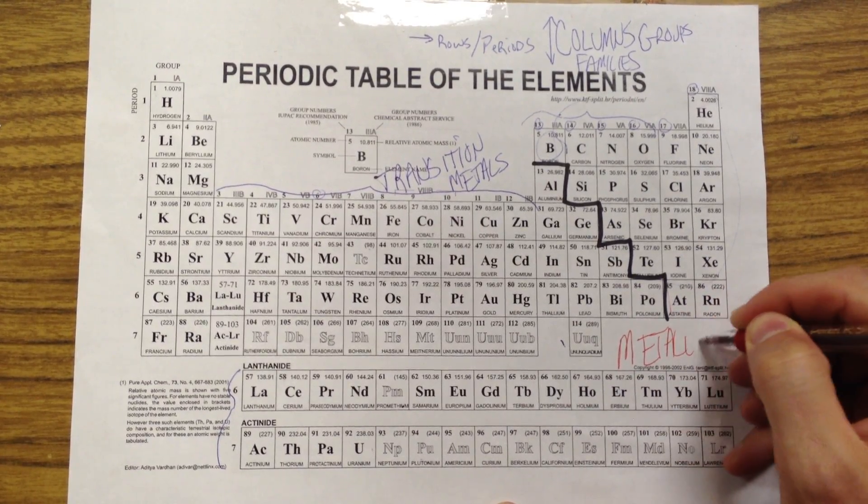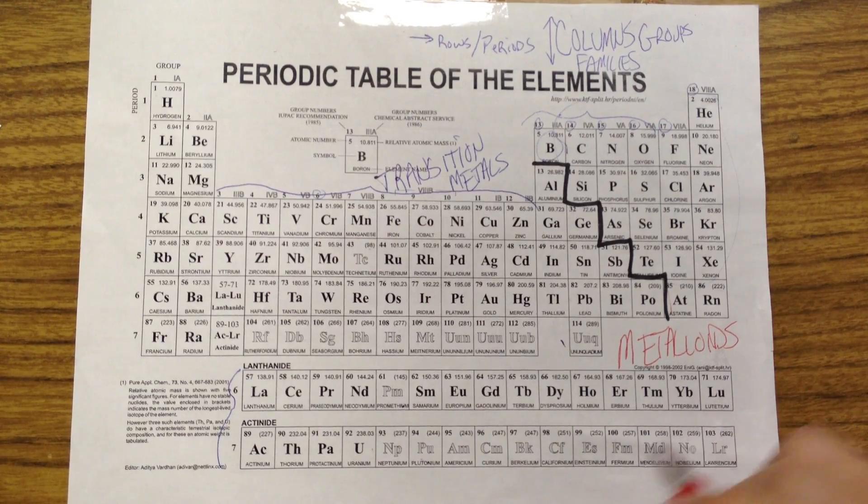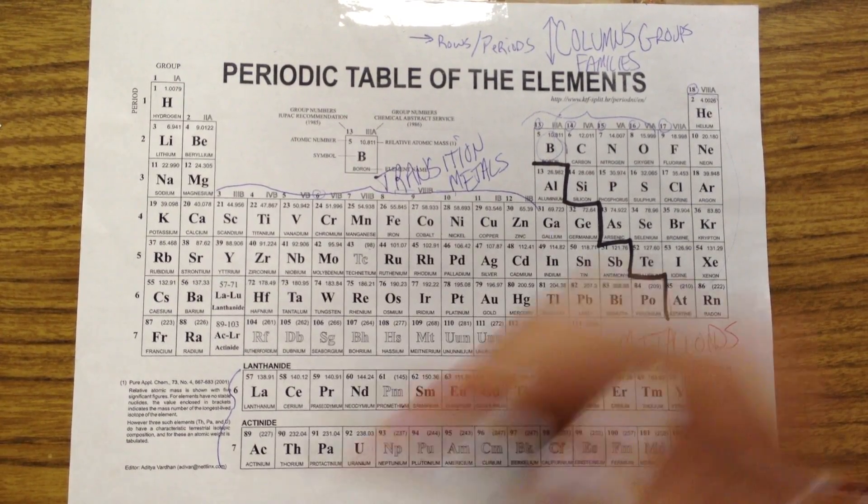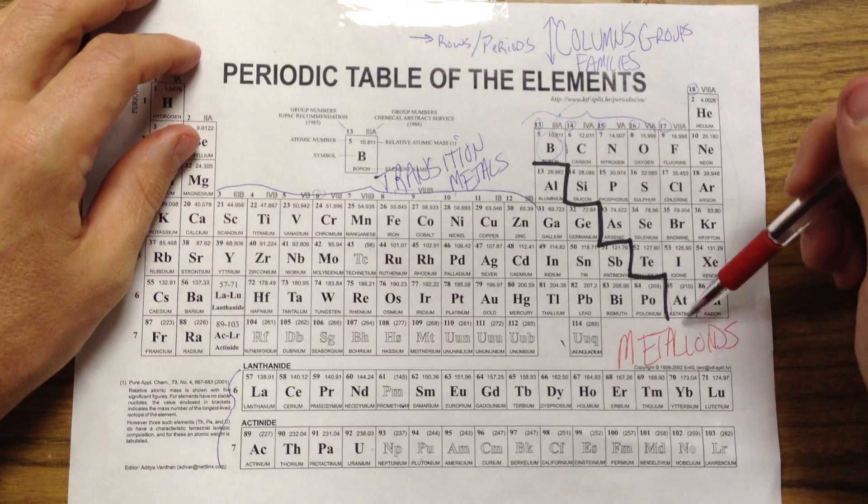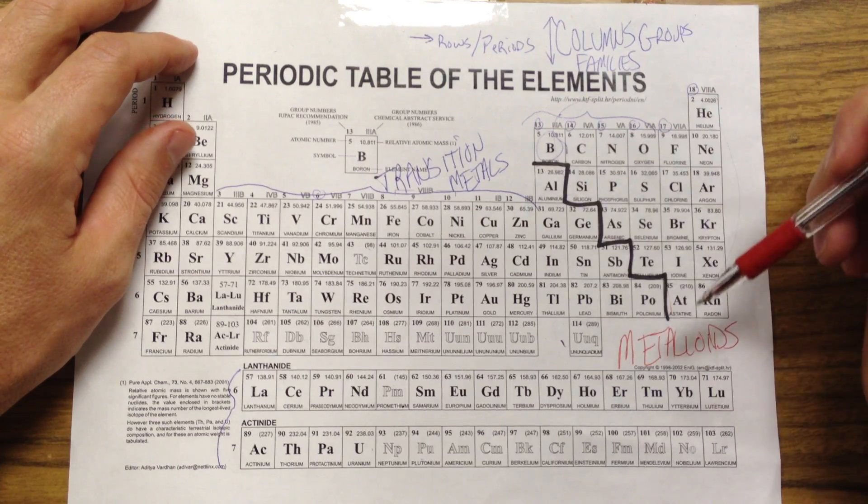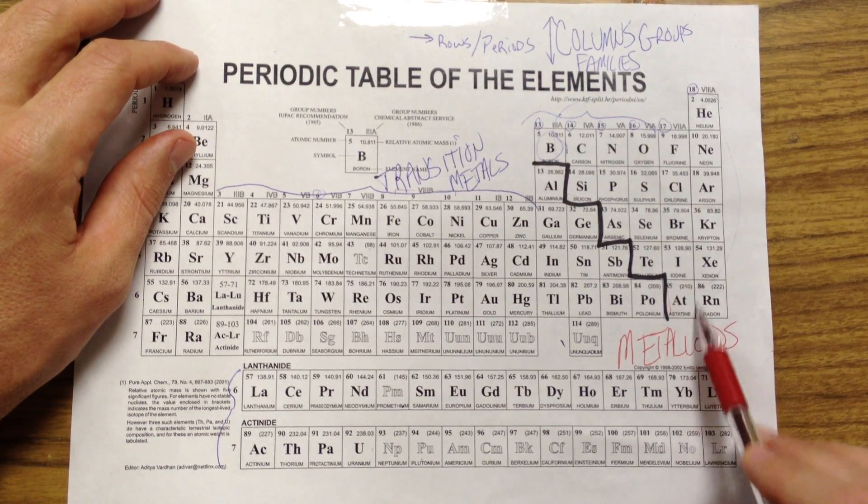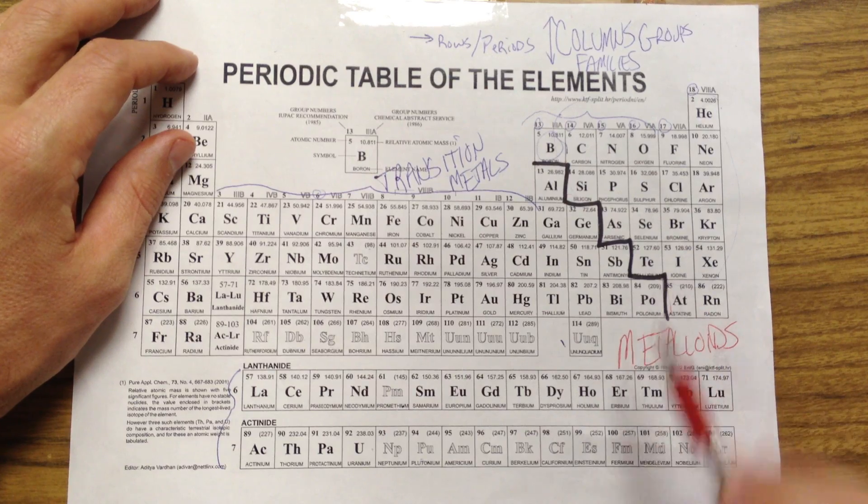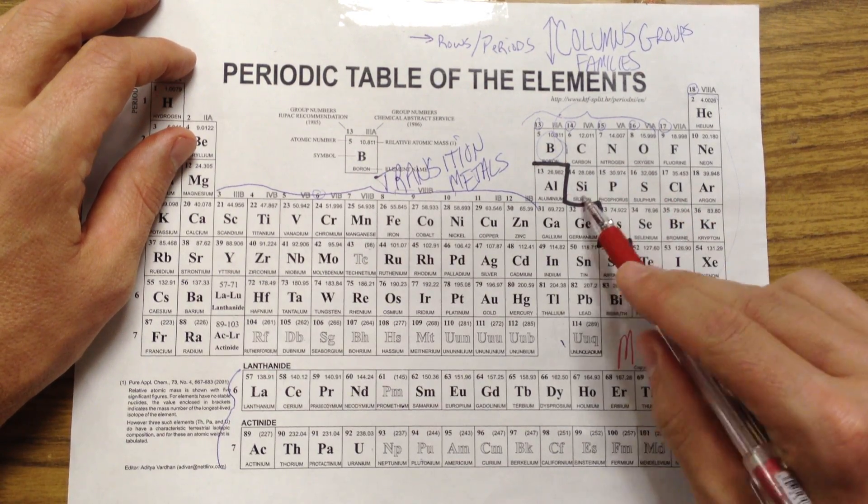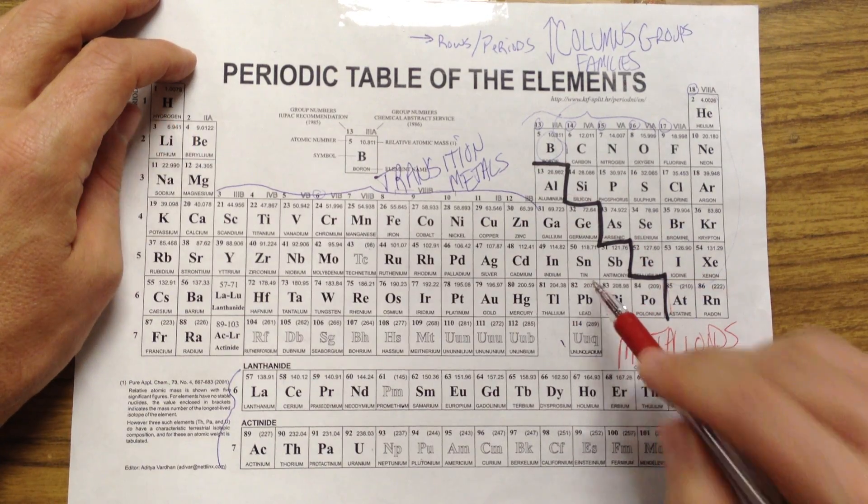Metalloids. Sometimes they're referred to as semi-metals in some books. I call them metalloids. And anything touching the line with a full edge, we will think of as a metalloid. So astatine would be a metalloid. Iodine wouldn't, because it's just touching with a corner. Arsenic would. Phosphorus wouldn't. Germanium would. Tin wouldn't.